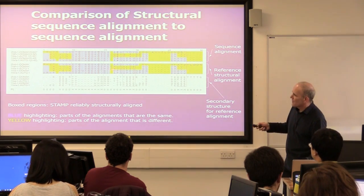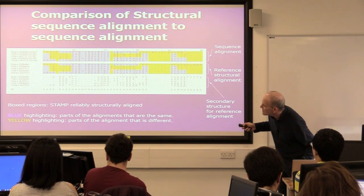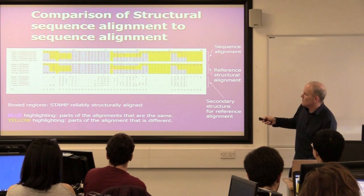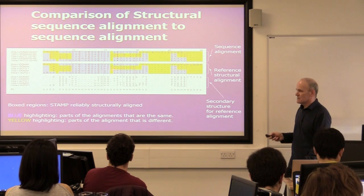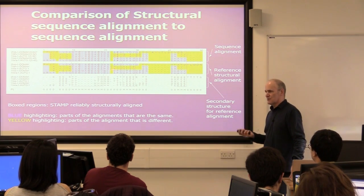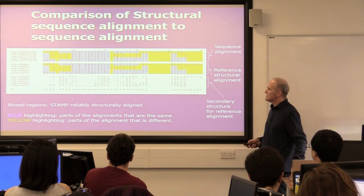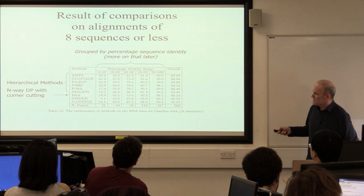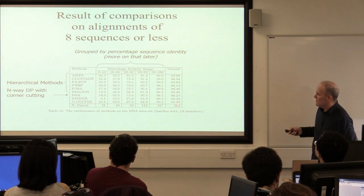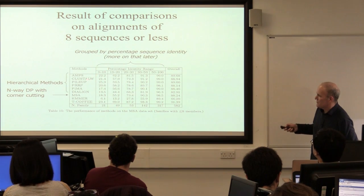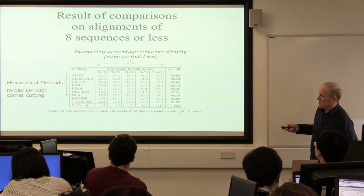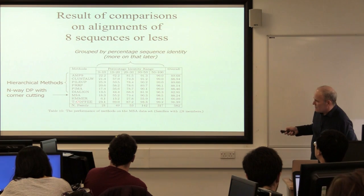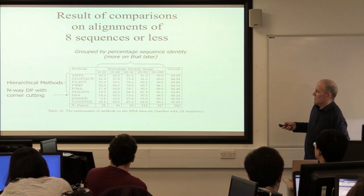You can compare an alignment from a sequence alignment program to a structure alignment and see how good they are. Here is a comparison of a sequence alignment on top generated by an alignment program, and a structural-based alignment underneath. You can see they're not identical. If you assume the structure alignment is correct, you can say how good your sequence alignment is. We did this on lots of different methods.